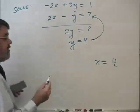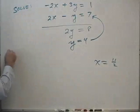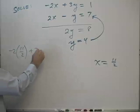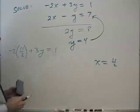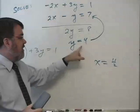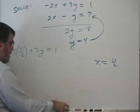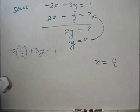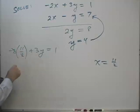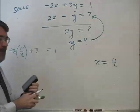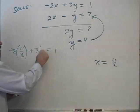And so if I go to the top equation, negative 2 times 11 halves plus 3y equals 1. I want to verify that this answer will fit this equation. And so we see that the 2's cancel. And you know what I forgot? I forgot to replace y with 4. That's 3 times 4.